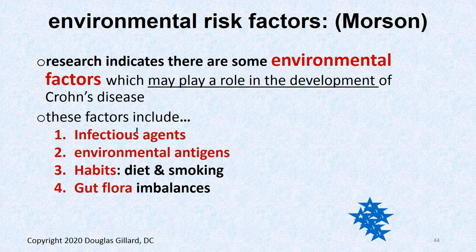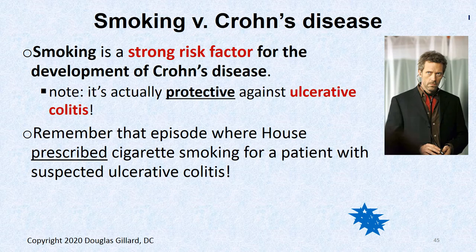Environmental factors include infectious agents, environmental antigens, smoking, and gut flora dysbiosis. Interestingly, smoking is actually protective against ulcerative colitis but significantly increases risk for Crohn's disease. Smoking particles enter the bloodstream, soak into the lamina propria and submucosal layer, and cause tight junctions to relax — creating 'leaky gut,' meaning increased membrane permeability between enterocytes that allows bacteria to slide through.